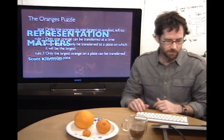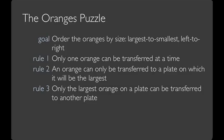Let's start with an example that comes from Don Norman and Jiajie Zhang. There's a really strange diner where the waitstaff put three oranges on the wrong plates. Your job is to help sort out which orange belongs on which plate. The oranges puzzle works by ordering the oranges by size, largest to smallest, left to right. Only one orange can be transferred at a time. An orange can only be transferred to a plate on which it'll be the largest. And only the largest orange on a plate can be transferred to another plate.